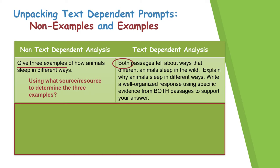When we look at the text-dependent analysis prompt, it asks you to look at both passages about how animals sleep in the wild. Notice the command verb explain is present, so students have to tell how or why animals sleep in different ways. The third sentence requires a well-organized response using specific evidence from both passages. So the students need to identify their evidence, make their claim, and then support their claim with evidence from both passages.